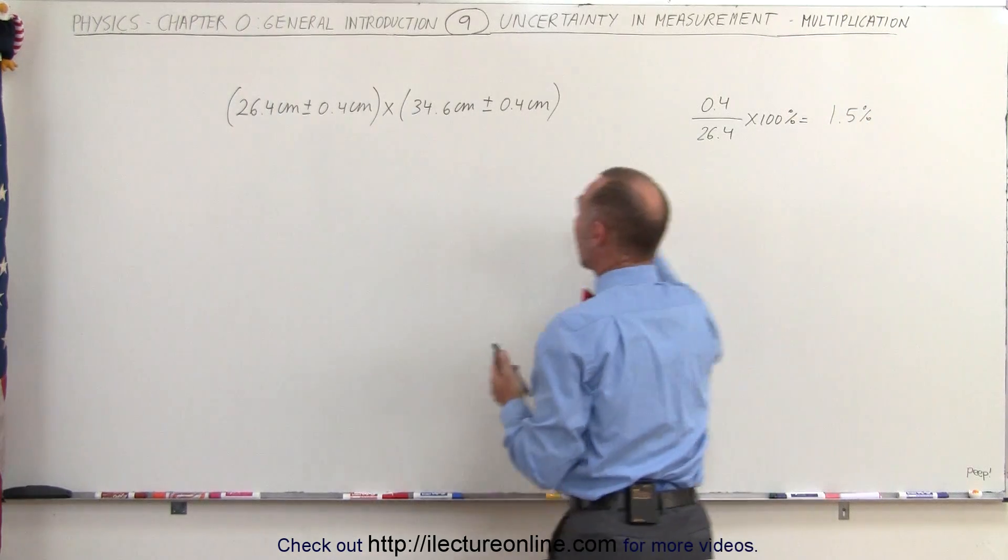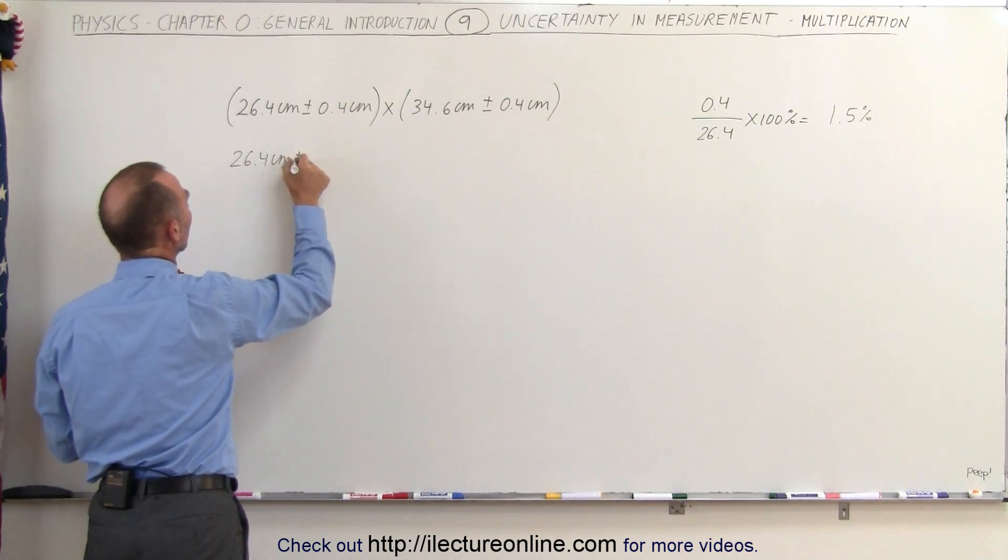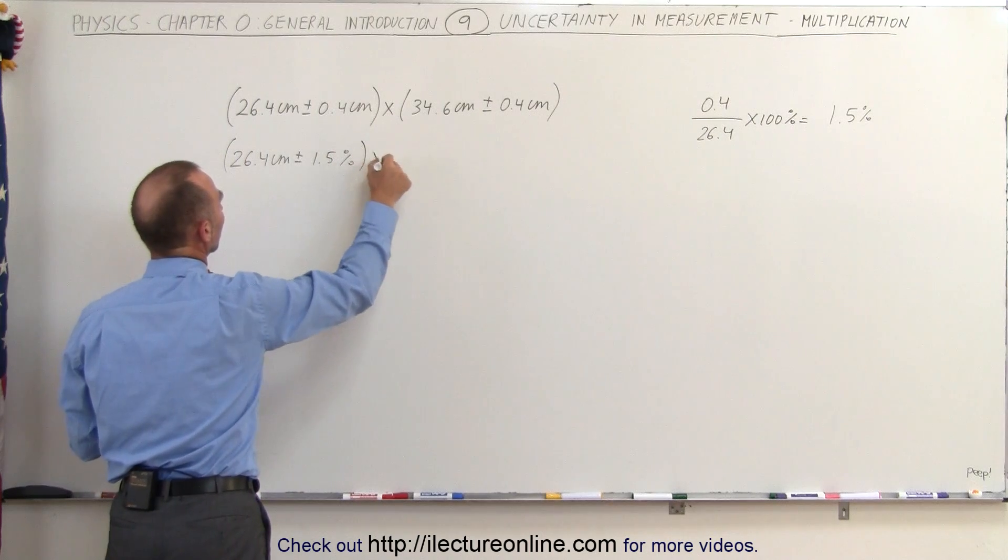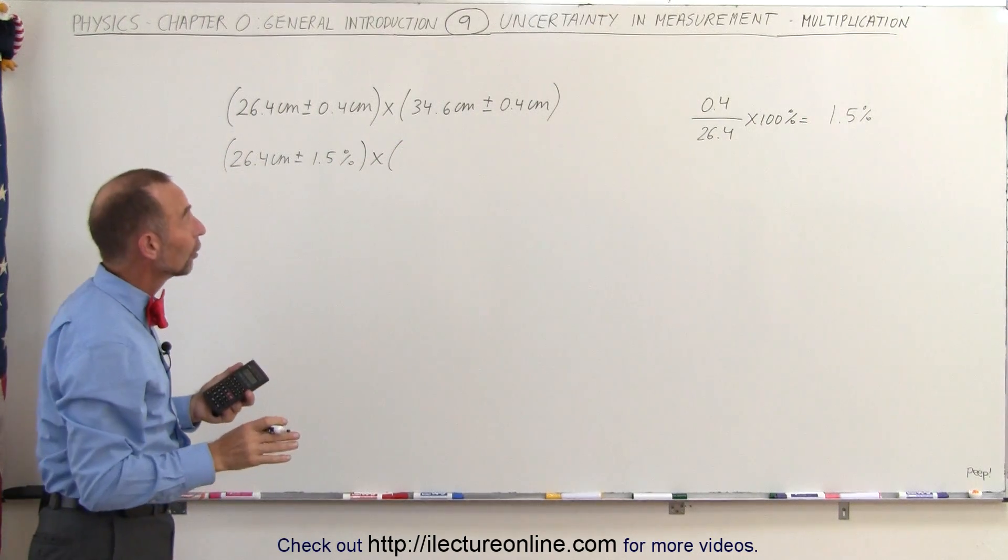So what we're going to do now is rewrite this as 26.4 centimeters plus or minus 1.5 percent. And then we're going to multiply that times this, and again we're going to convert the 0.4 to percent.